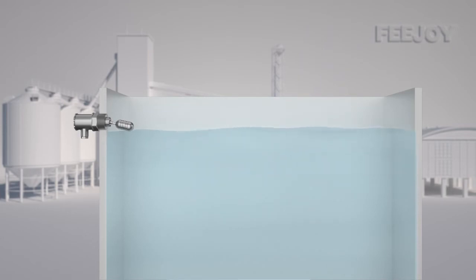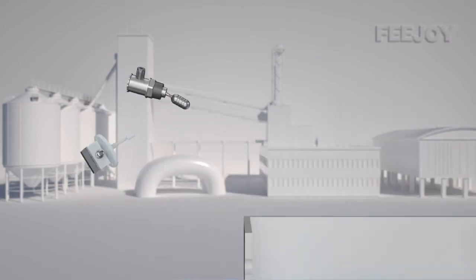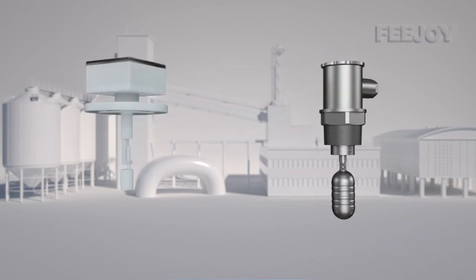In practical applications, the side-mounted float switch can not only realize single-point control and early warning, but also can install multiple side-mounted float switches to achieve more complex level control due to its flexible structure.